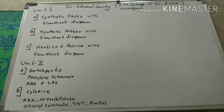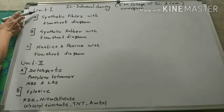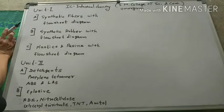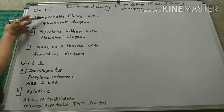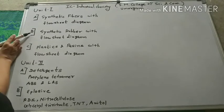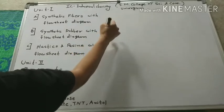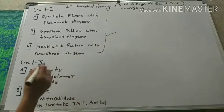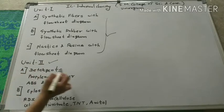Good morning students. Today we are going to start industrial chemistry unit number 2. Unit 1 had completed 3 chapters: chapter number 1 synthetic fibers with flow sheet diagram, chapter number 2 synthetic rubber with flow sheet diagram, and chapter number 3 plastic and resin with flow sheet diagram. We have completed these 3 parts. Now today we will discuss unit number 2, chapter number 1: detergent.